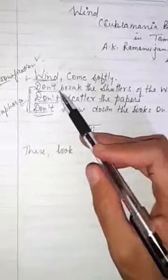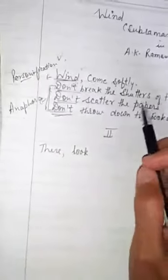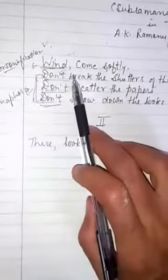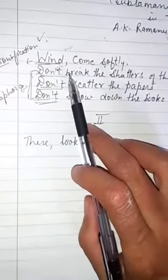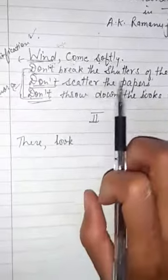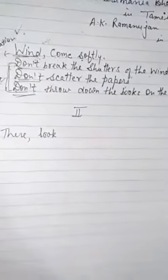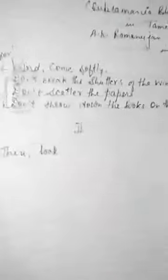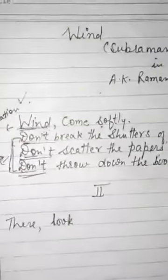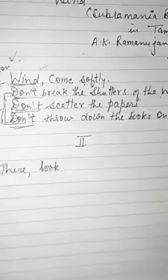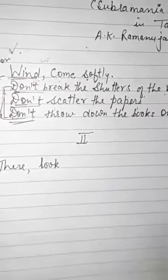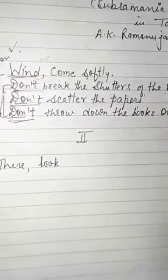In the second line, the poet says don't break the shutters of the window. You can see Subramanian Bharati talking to wind. Don't break the shutters of the window. Don't scatter the papers. Don't throw down the books on the shelf.